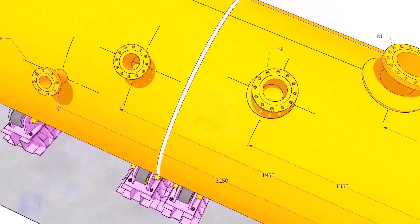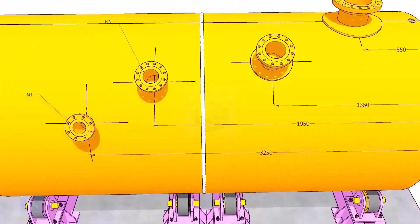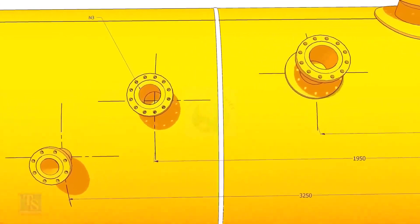Draw an arc of 1350 millimeters from the edge of the shell intersecting this line. This point is the center of the nozzle N2.